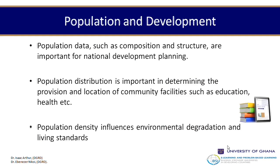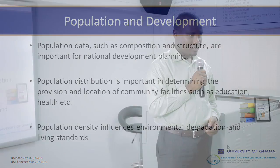Population data such as composition and structure are important for development. Every government — in this country we have the National Planning and Development Commission — is in charge of examining the size, growth, trends, and direction of growth, then using this information for planning purposes. A lot of peri-urban areas are growing out of proportion; they don't have roads, water supply, or electricity. These are some of the functions that a commission like that is supposed to play — looking at the growth of the population, which direction it's going, and being able to appropriately plan for it.